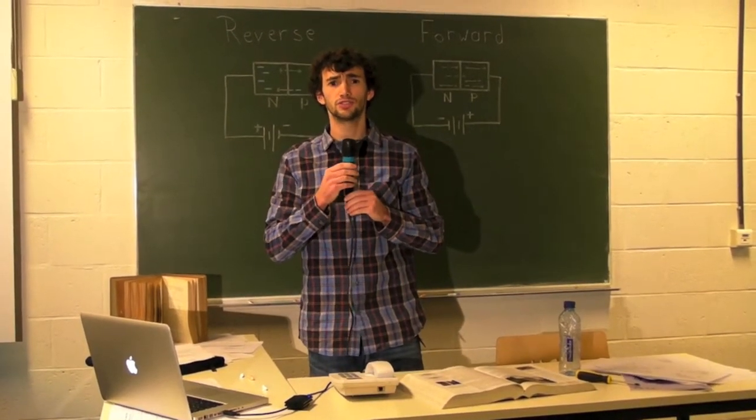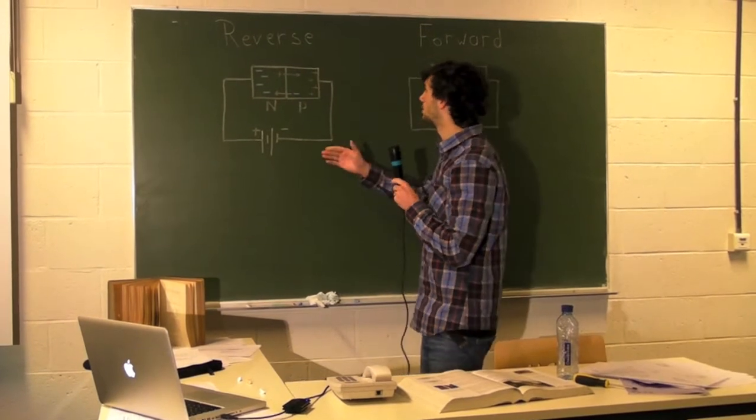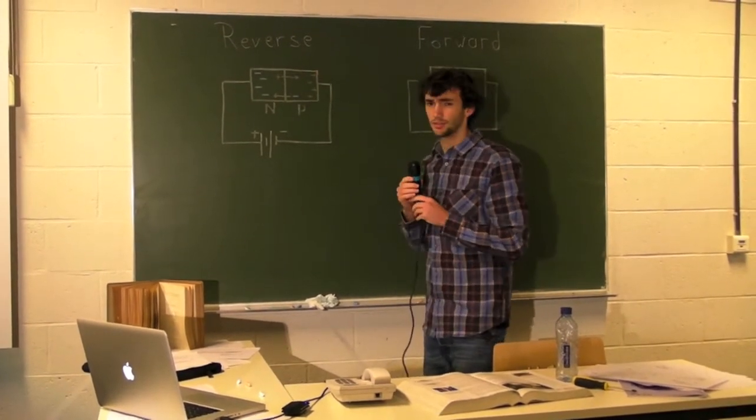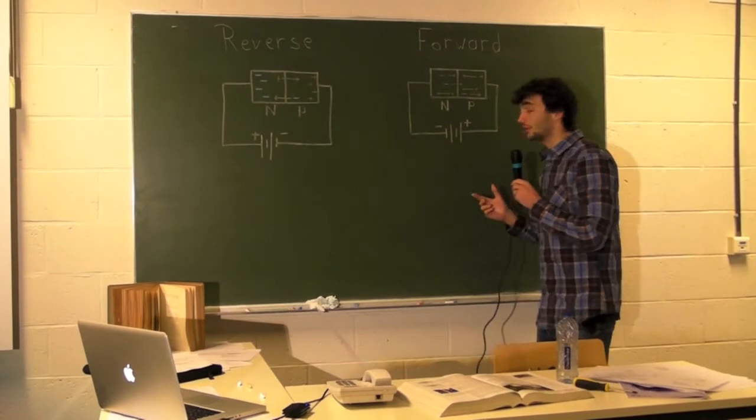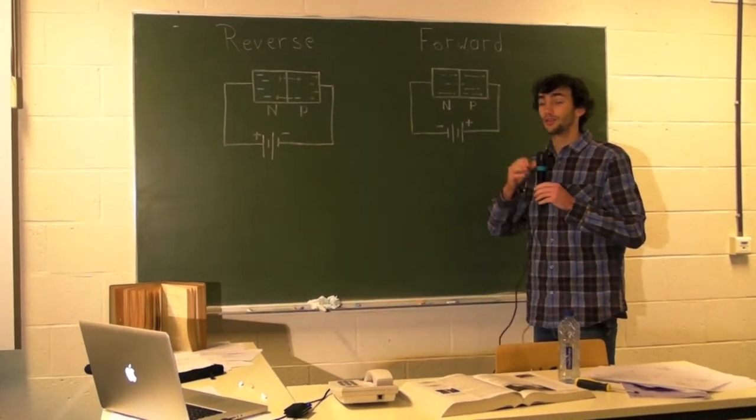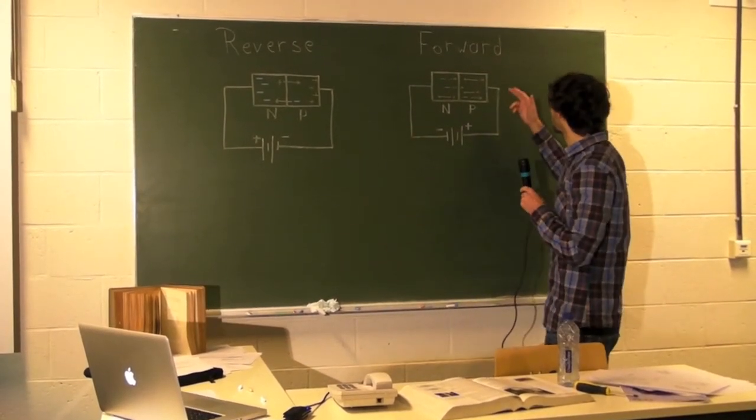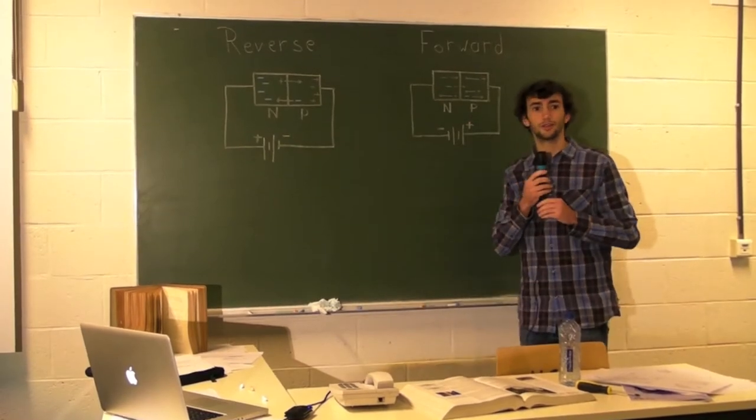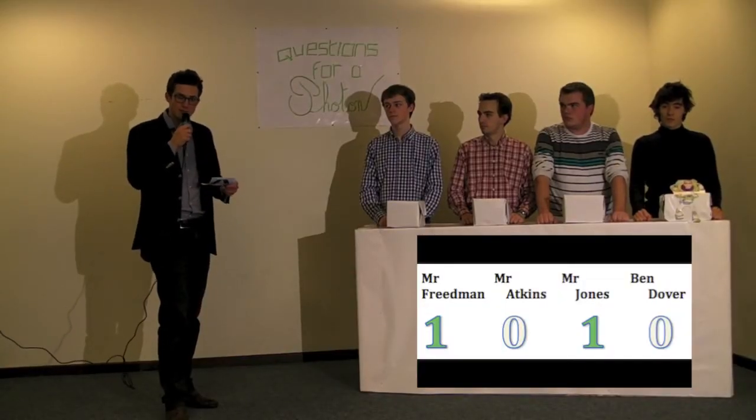If the diode is in the reverse direction, the current doesn't flow because charges accumulate to the extremities. In opposite, if the diode is in the forward direction, the current crosses because the charges are allowed to flow through the diode. Now, let's continue with the third question.